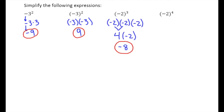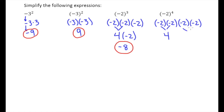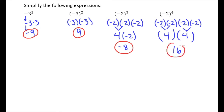Now for the last example: negative 2 to the fourth power means negative 2 times negative 2 times negative 2 times negative 2. Multiply negative 2 times itself and you get 4; do that again and you get another 4. So you have 4 times 4, giving positive 16. Taking negative 2 in parentheses raised to an even power, we do get a positive result.